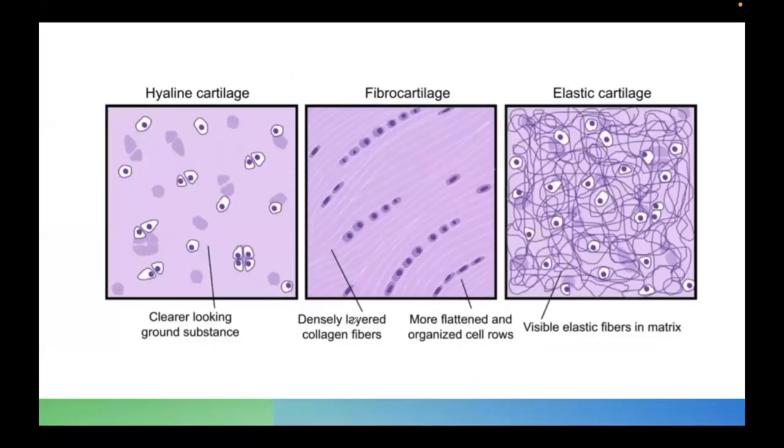Histologically, if you look at the microscope, the hyaline cartilage has a clearer ground glass substance, the ground glass appearance. The elastic cartilage has visible elastic fibers. The fibrocartilage have more flattened and organized rows of cells, like what you see here. These are the classic histologic features of the cartilage.